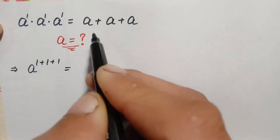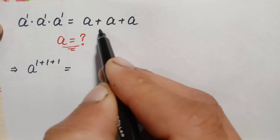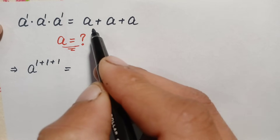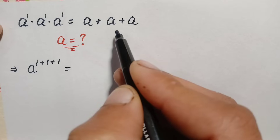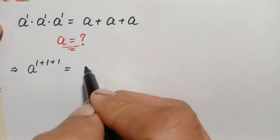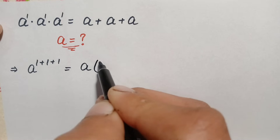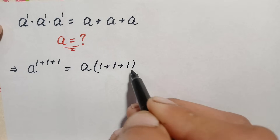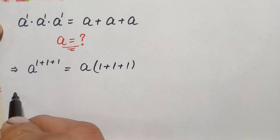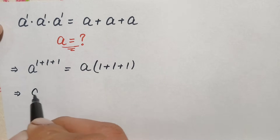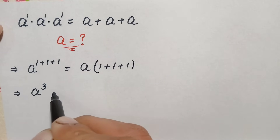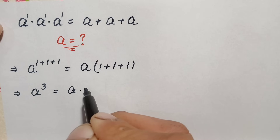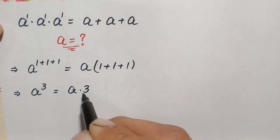On the right-hand side, 'a' is added three times, so we can write this as 3a. We can also take 'a' as a common factor from the right-hand side, leaving only 1 in each term. So the left-hand side becomes a to the power 3, which equals a times 3.